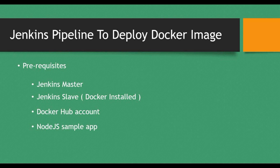Some prerequisites for this tutorial: we're not going to show how to set up a Jenkins master — you should already have one, and I'll link my video for that in the description. I have already created videos for setting up Jenkins master and Jenkins slave, so you can refer to those. You need a Jenkins master, a Jenkins slave with Docker installed, a Docker Hub account where you'll create an authentication token, and a Node.js sample app or any other app with a matching Dockerfile.